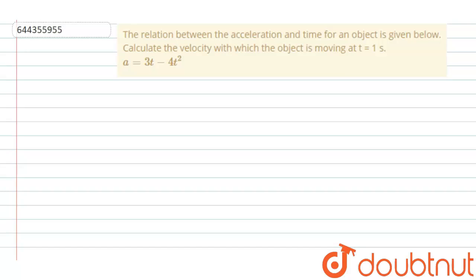Hi everyone, the question is given. The relation between the acceleration and time for an object is given below. Calculate the velocity with which the object is moving at t equal to 1 second. And relation is given this one.